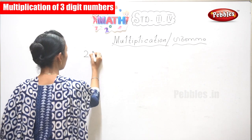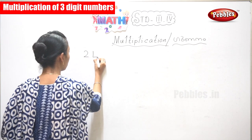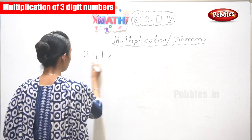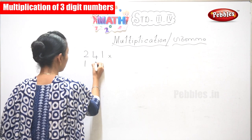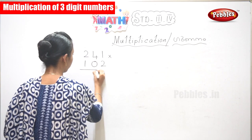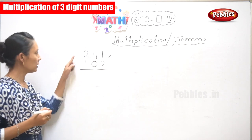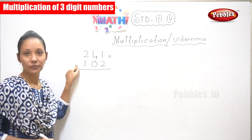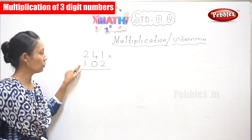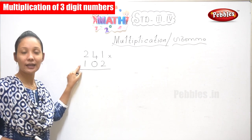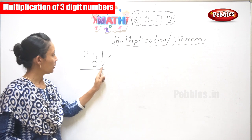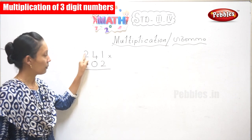Now, the same way: 2, 4, 1 into 1, 0, 2. You can see here 3 digits on top and 3 digits down. That's why we are going to do 3 numbers.